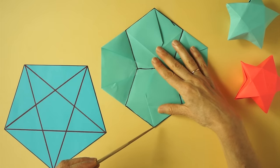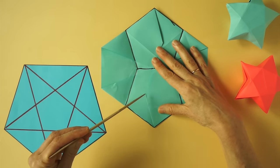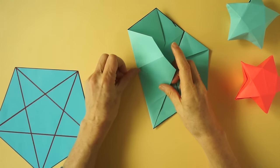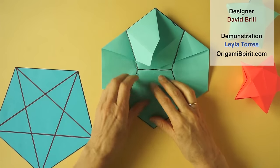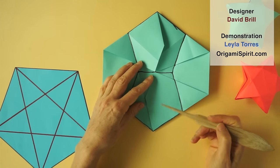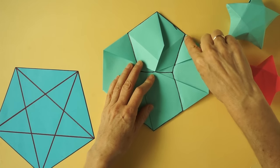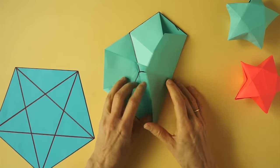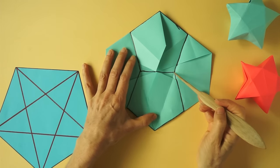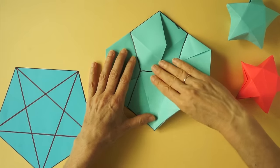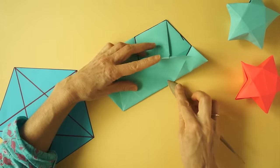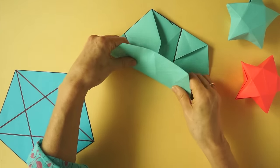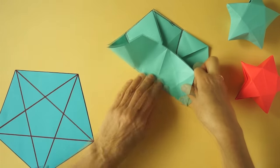Now we connect this corner to this corner. We have a guideline here and we extend this fold that we have here. Sharp crease. Now we connect this corner to this corner. And we connect this corner to this corner. We extend this fold. Connect this corner to this corner. And connect this corner to this corner.